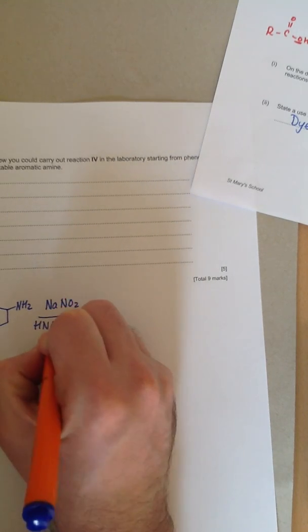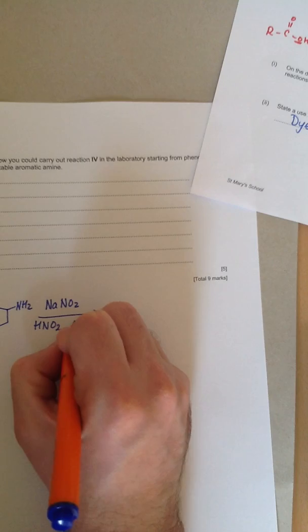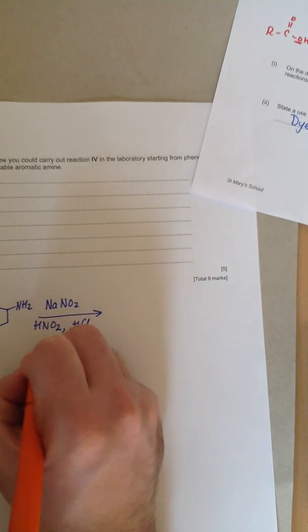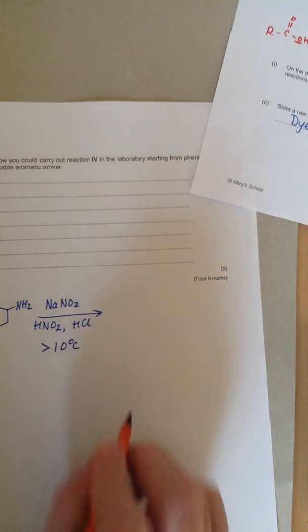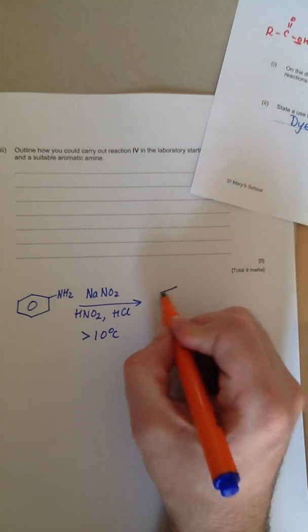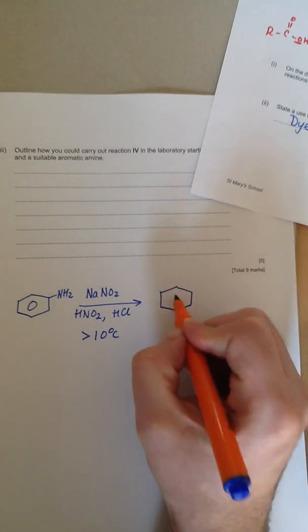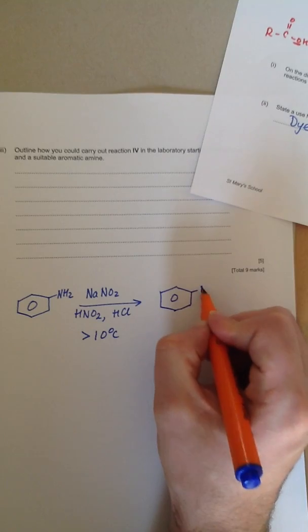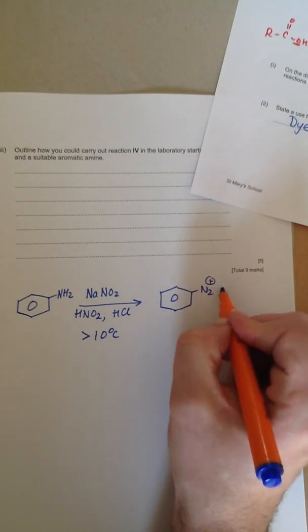You use nitrous acid, HNO2, HCl, and importantly, you need to keep it less than 10 degrees C. And that then forms the diazonium salt, which is N2 plus Cl minus.